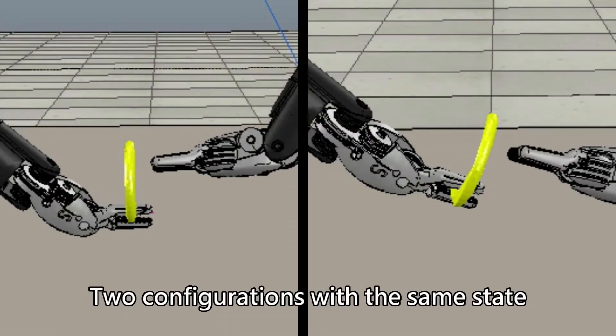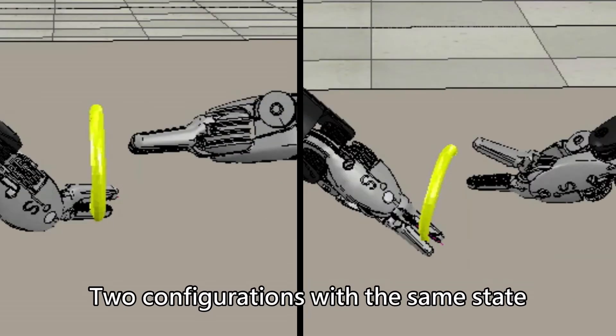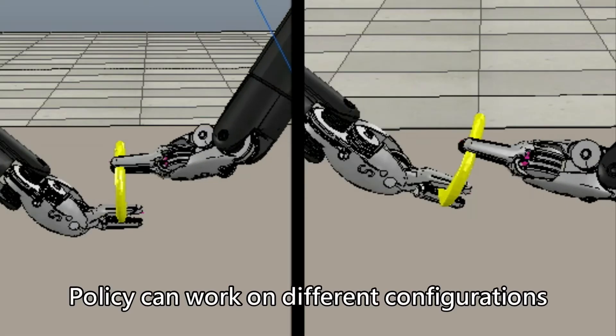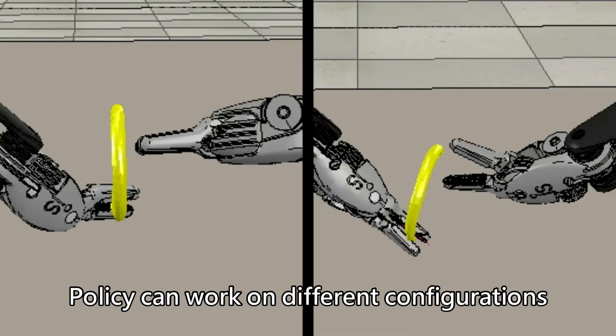As a result, two very different configurations of the robot can have the same state, as long as the relative poses among the end effectors and the needle remain the same. This implies that the policy can work on any robot configuration or even on different robot arms.